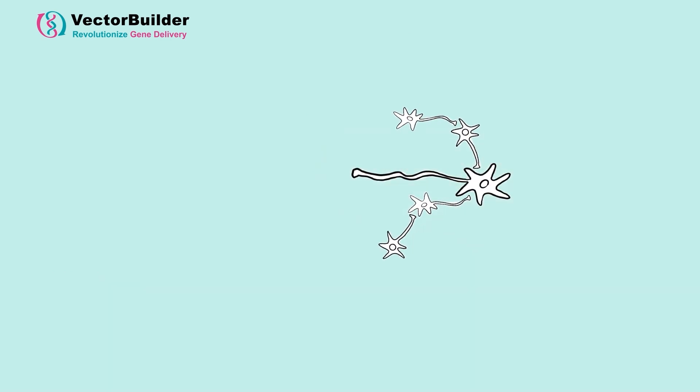Luckily, primary neuron targeting is possible thanks to the TVA ENVA system. TVA is a receptor protein found in avian species that is absent from mammals and a highly specific receptor for the ENVA protein.